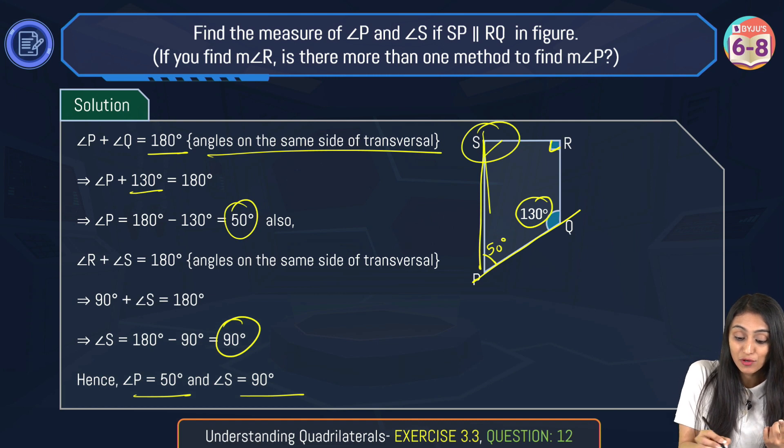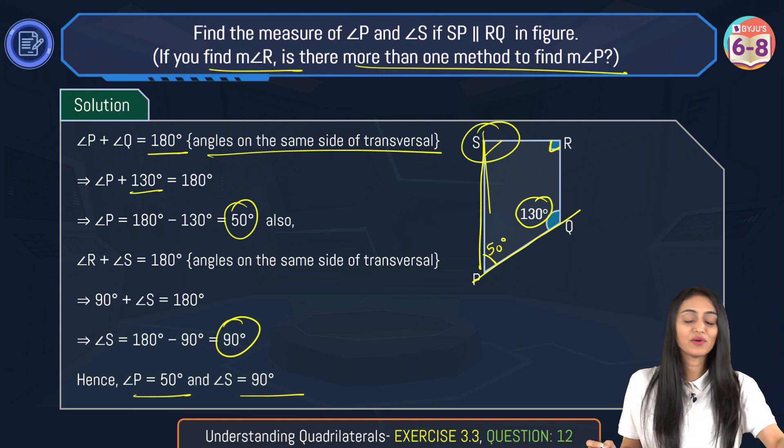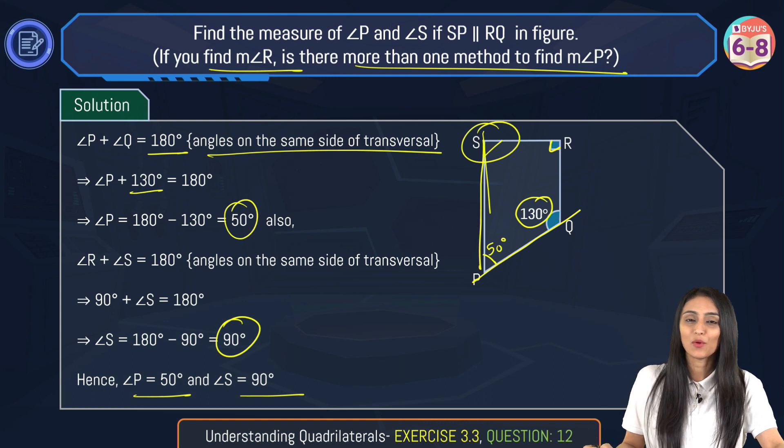In the next part it says: if you find the measure of angle R, is there more than one method to find out the measure of angle P? What do you think? Yes, there is another method as well.